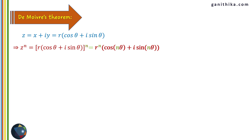To repeat: if z = r(cosθ + i sinθ), then z^n = r^n(cos nθ + i sin nθ). The power n is distributed so that the modulus r is raised to the power n, whereas the argument θ is multiplied by n. You should understand this theorem clearly to apply it to the examples coming soon.